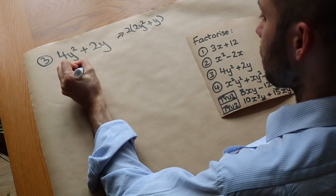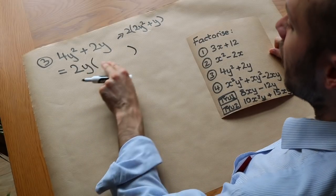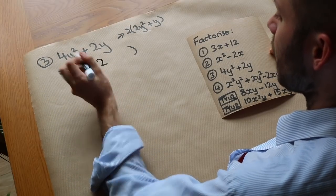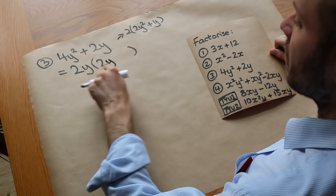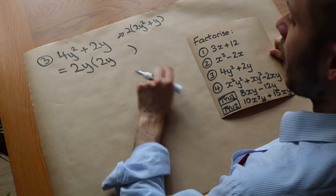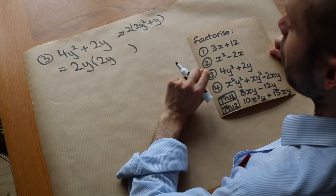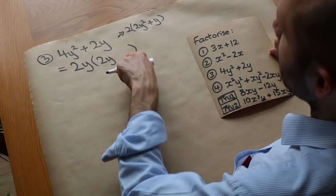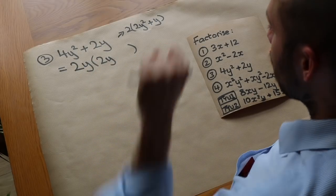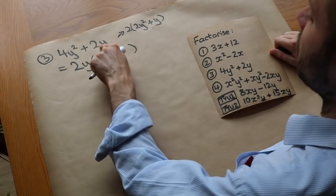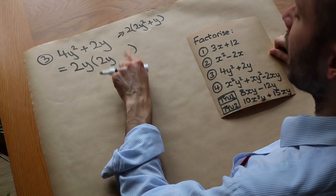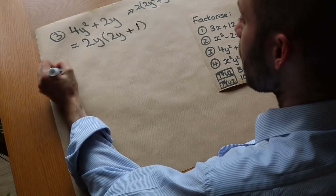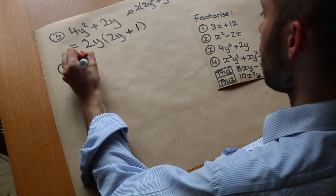Looking at the variables in 4Y²+2Y: Y² and Y both have a Y in common. So we factorize out 2Y. Then 2Y times what gives 4Y²? Well, 2 times 2 gives 4 and Y times Y gives Y², so it's 2Y. And 2Y times what gives 2Y? Some students think it's zero, but we're factorizing it out — 2Y times 1 gives 2Y. So the full factorization is 2Y(2Y+1).